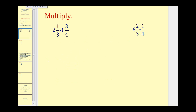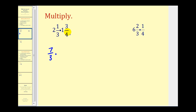The most important thing about multiplying mixed numbers is we have to convert these to improper fractions. Remember to do that, we multiply the denominator times the whole number and then add the numerator. So three times two would be six plus one — that would be seven, so we have seven-thirds times. Here we have four times one, that would be four, plus three, and that would be seven-fourths.